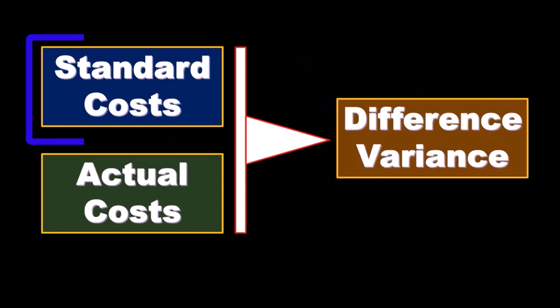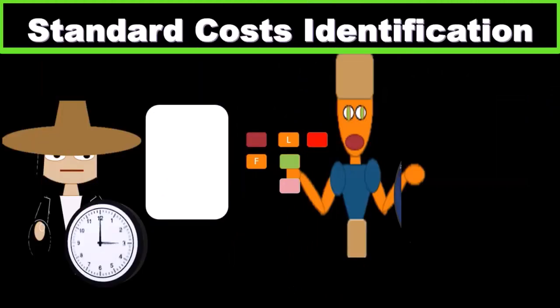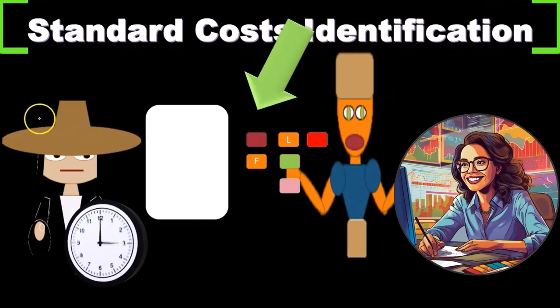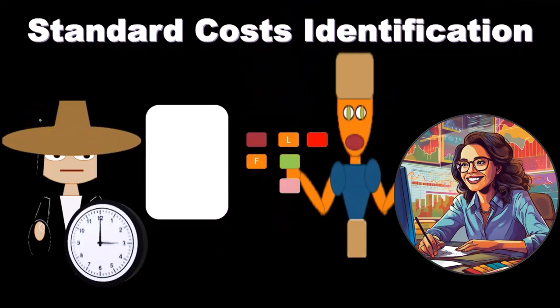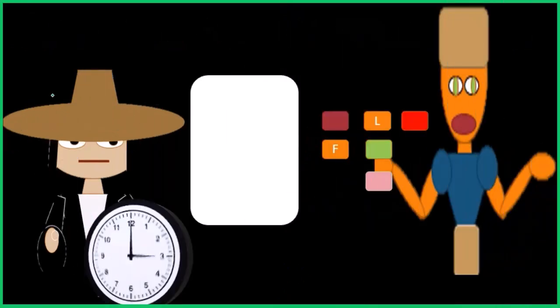If we consider things like standard costs, we might imagine somebody taking a stopwatch to the production item. For example, this is going to be a phone. This is our worker here, and this is our managerial accountant going in and trying to say, 'Well, how long does it take to make each phone?'